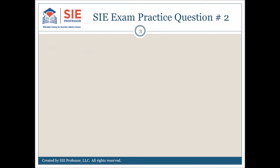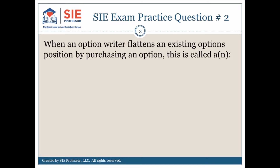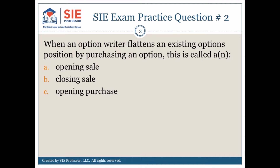SIE exam practice question number 2. When an option writer flattens an existing options position by purchasing an option, this is called: A) opening sale, B) closing sale, C) opening purchase, or D) closing purchase. Pause here to consider the choices.